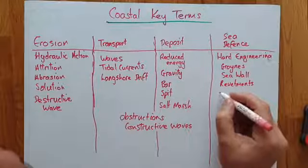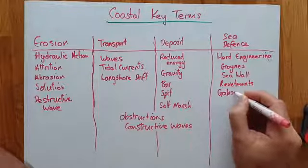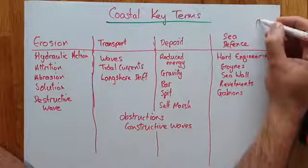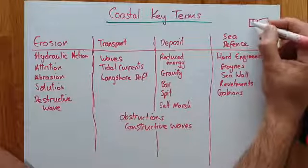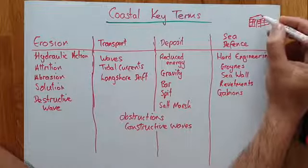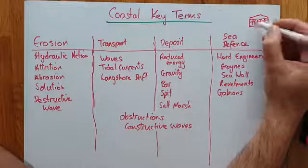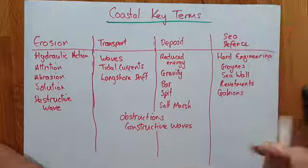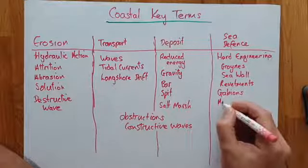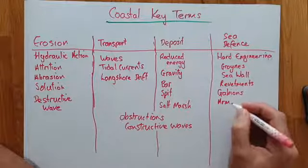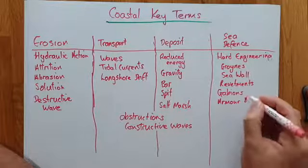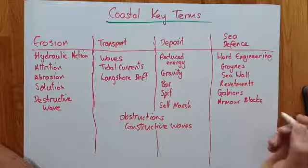Gabions — it's a mesh basket full of rocks, generally used to absorb energy from waves, particularly in storms, to protect soft embankments.